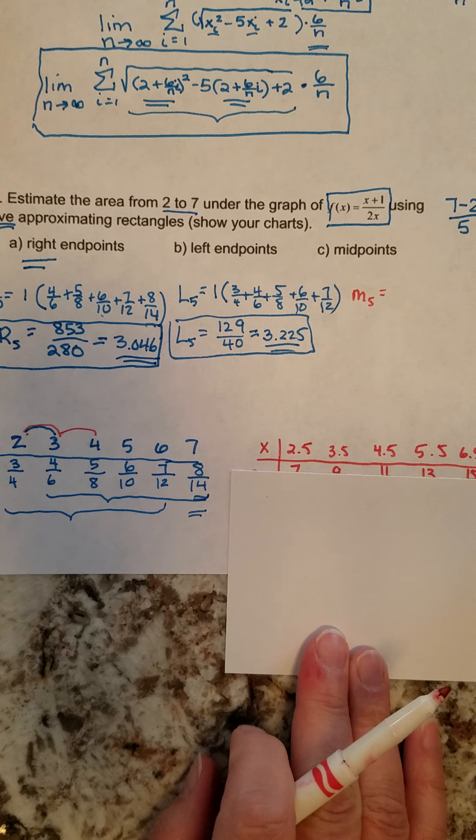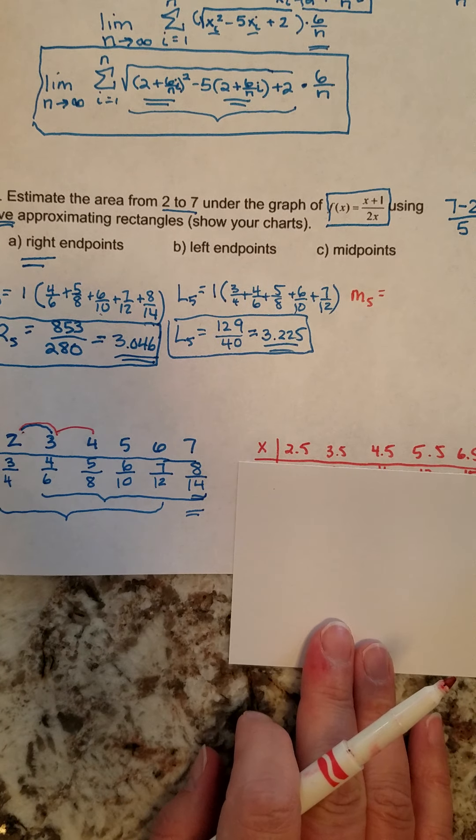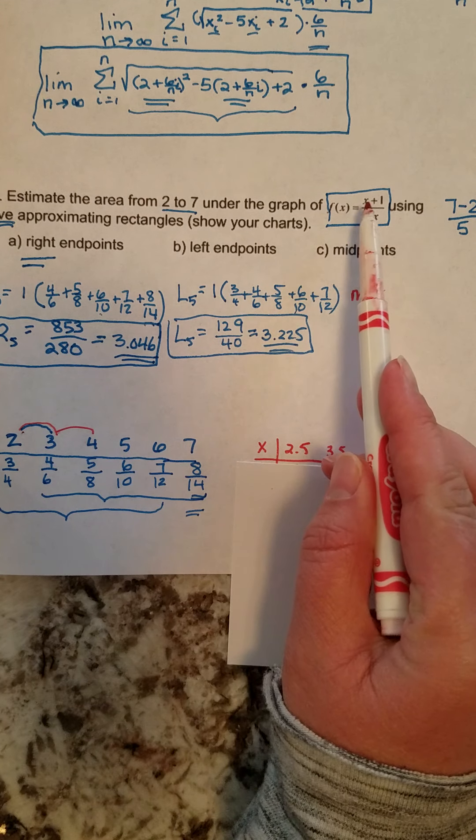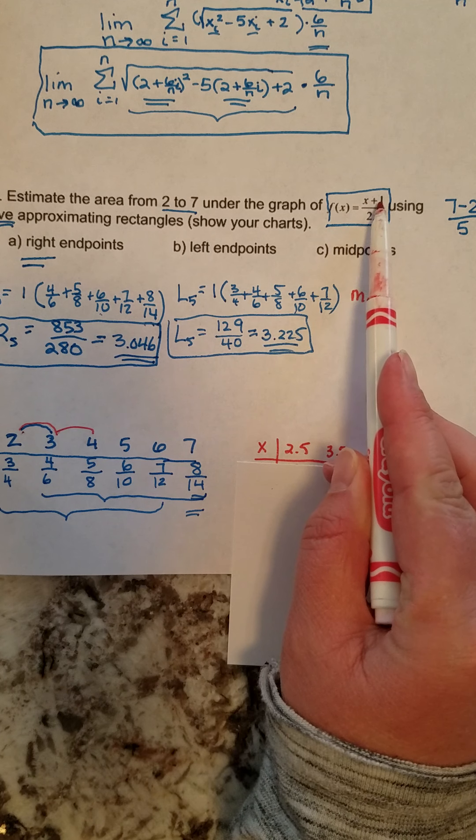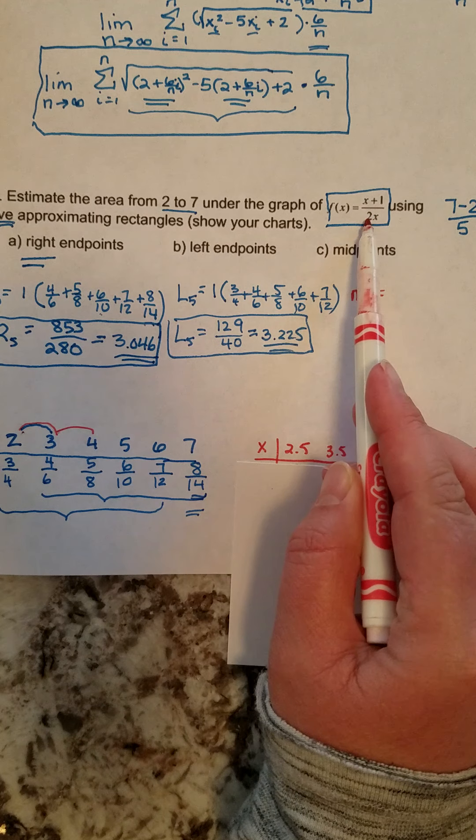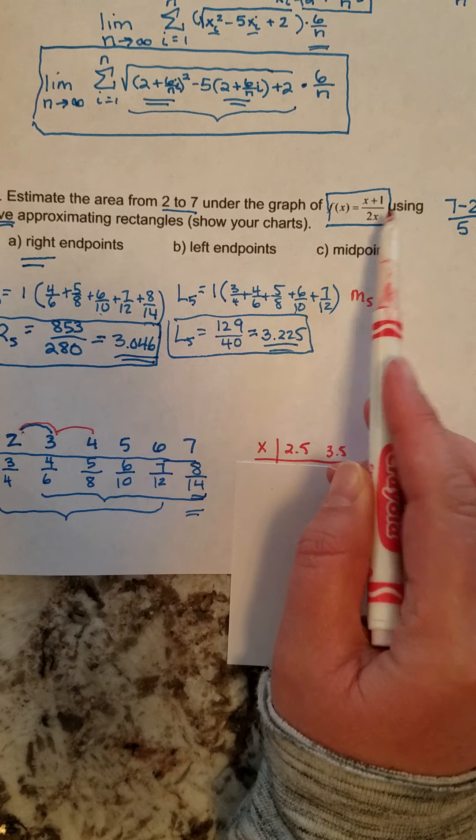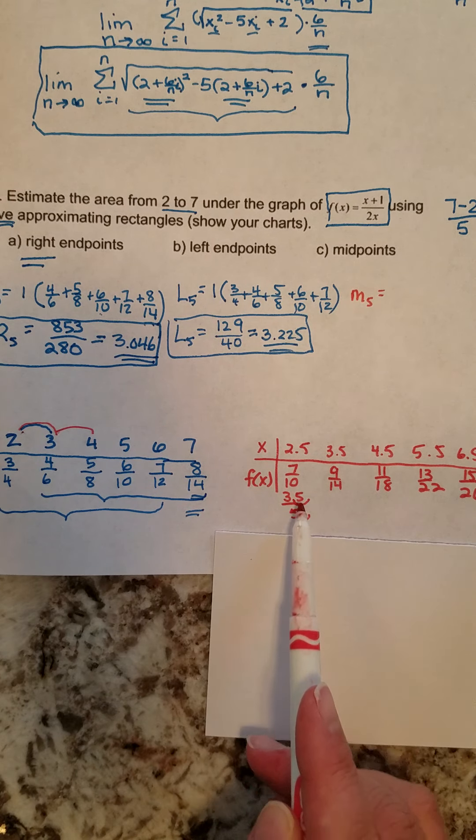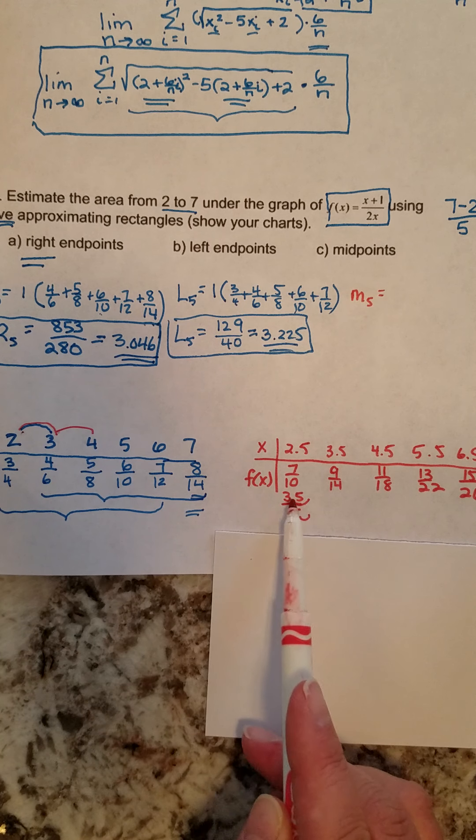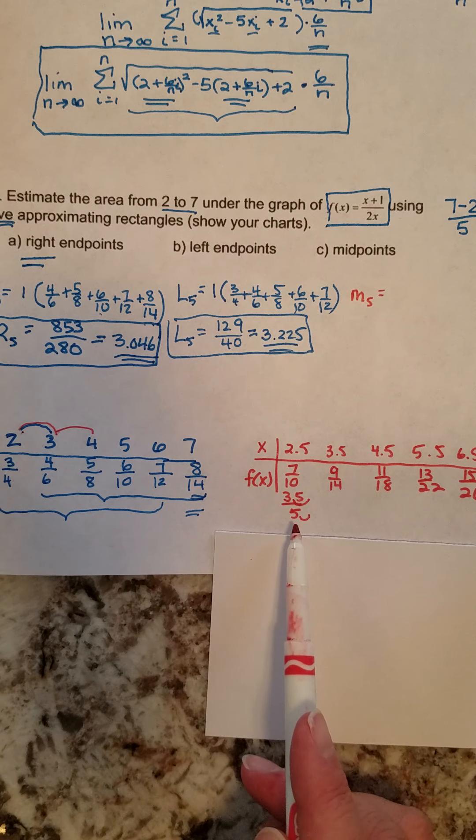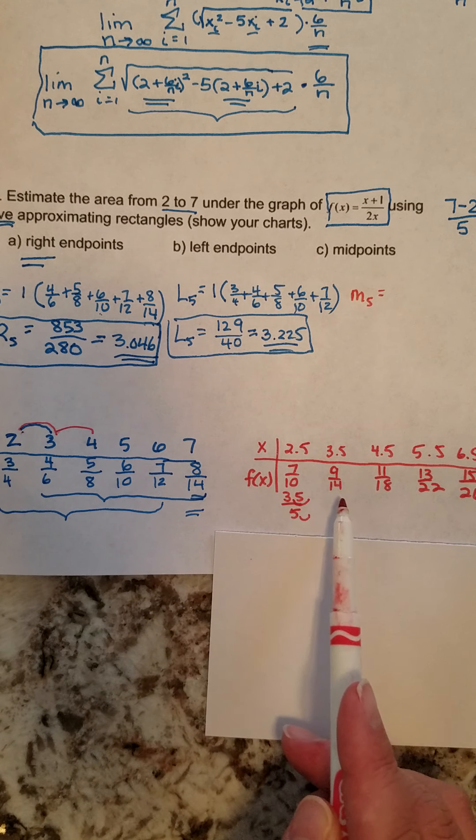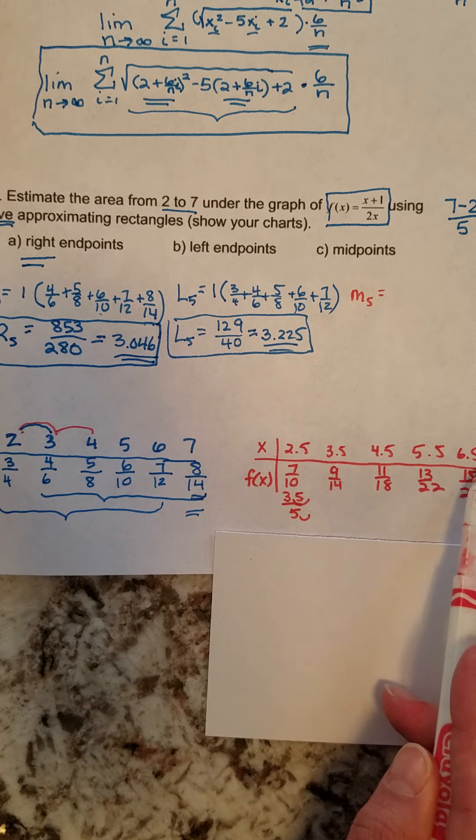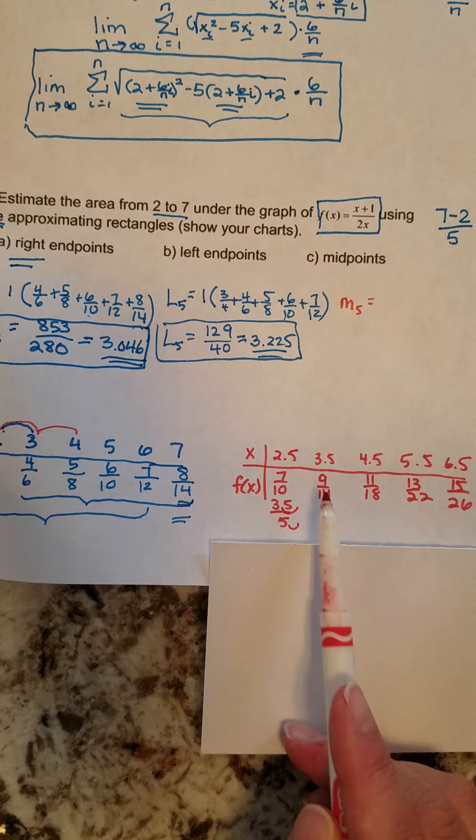So I have a new chart going over here on the right side, and I plug each of these values in. When I plug 2.5 into my function, 2.5 plus 1 is 3.5, and 2.5 times 2 is 5. So I ended up getting 3.5 over 5, but if I move the decimal place over, I have 35 over 50, which reduces to 7 tenths. I subsequently can do this with 3.5, 4.5, 5.5, and 6.5, and I get each of these values.